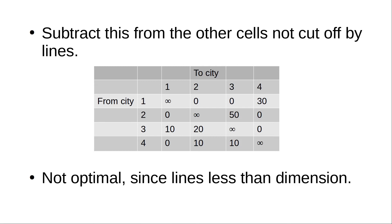In the second iteration, we start with assignment. The first row with a lone zero is row 3, so we box it. We find the column of the assigned zero — column 4 — and cross off the zero there. Row 4 then has a lone zero, so we box it and cross off the zero in column 1. We then analyze columns: we box the zero in column 2 and cross the zero in column 3. All rows have been processed.